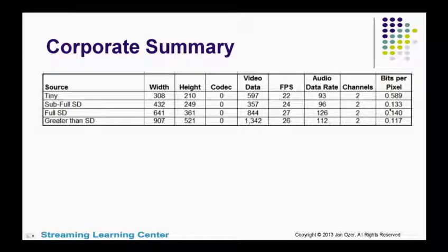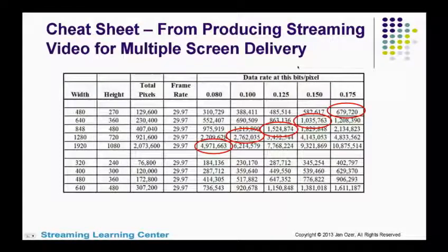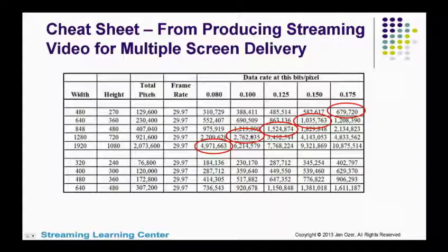Here's the corporate summary. The 0.589 in the very tiny category is way too high. Then at 0.133 it normalizes for full SD, and then it goes down for greater than SD. From my book — producing streaming video for multiple screen delivery — you see different bits per pixel values: 0.08 to 0.1, 0.125, 0.15, and 0.175. If I'm producing 1080p video, I'll encode at around 5 megabits per second and target 0.08 bits per pixel. For 720p, I'll encode at 2.7 megabits per second and target 0.1. Print this chart and use it next time you encode a video file.